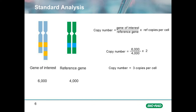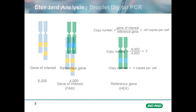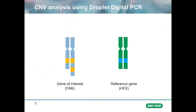Where Droplet Digital PCR comes into play is in providing accurate counts. To run a copy number variation analysis using Droplet Digital PCR, we would use a probe-based assay labeled with FAM to quantify our target of interest and a HEX-labeled probe for our reference gene. It is best to run these assays in duplex mode versus two individual wells, as it eliminates one source of variation: pipetting. Pipetting can easily vary by 5% or more from well to well depending on the volume that is pipetted.